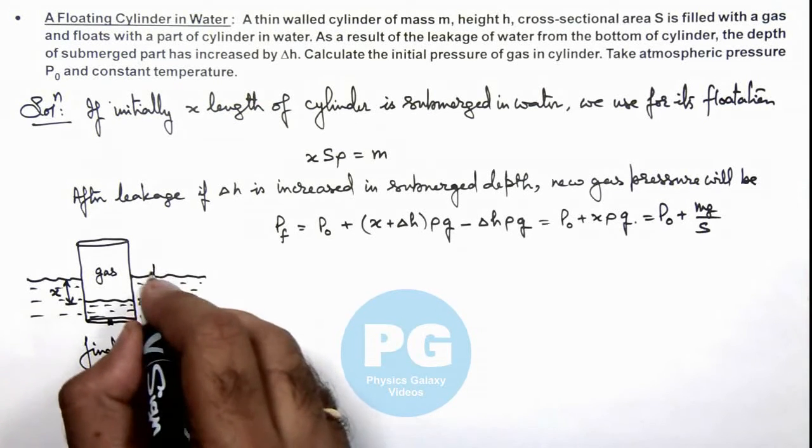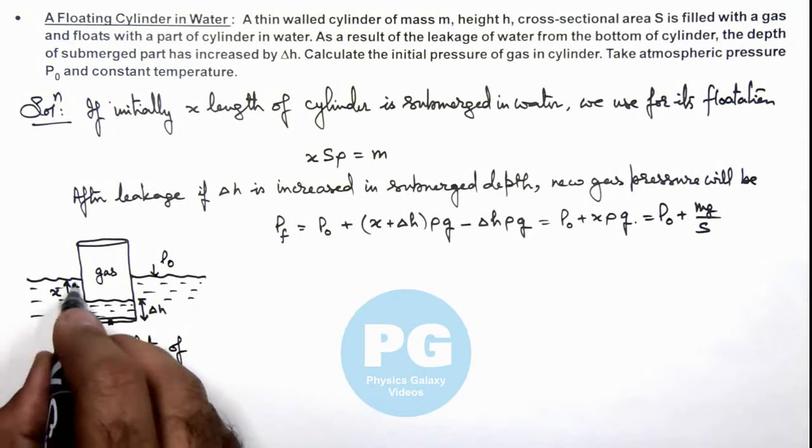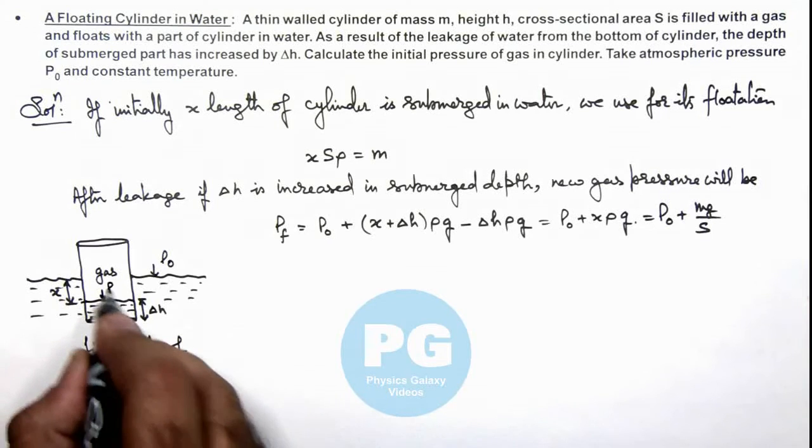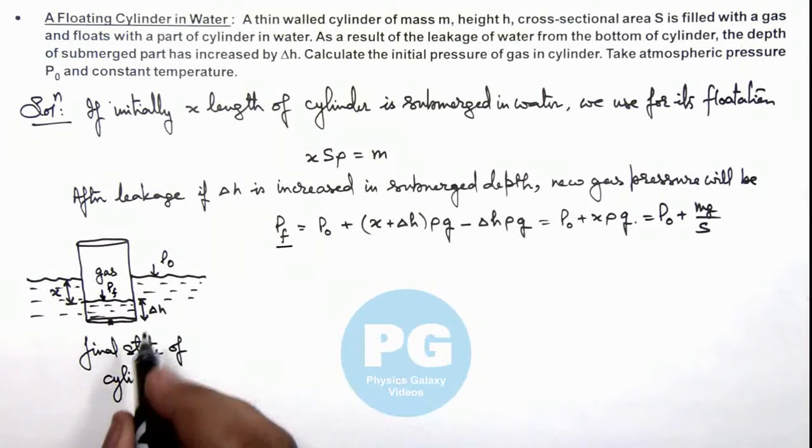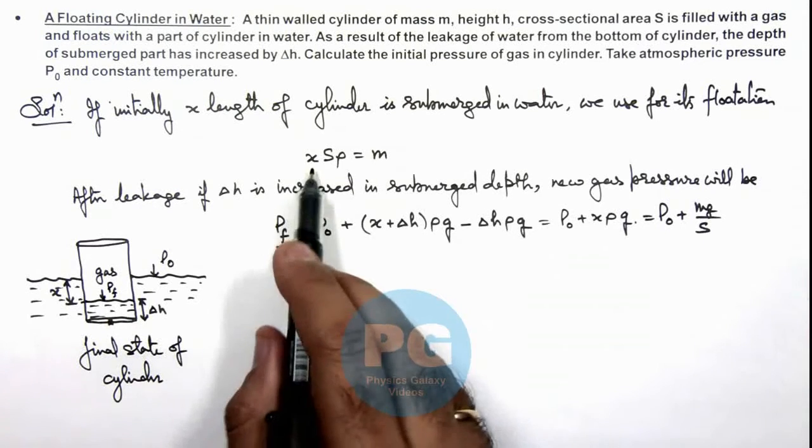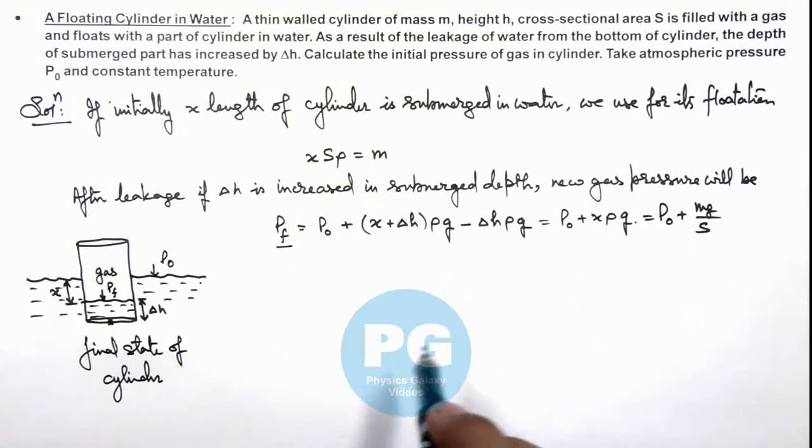So if here pressure is P₀, at a depth x below the surface of water we can say pressure of gas will be, which is Pᵢ or P final we have written over here. This can be written as P₀ plus x·ρ·g and the value of x·ρ we can write as m/S. So this is P₀ plus m·g/S.